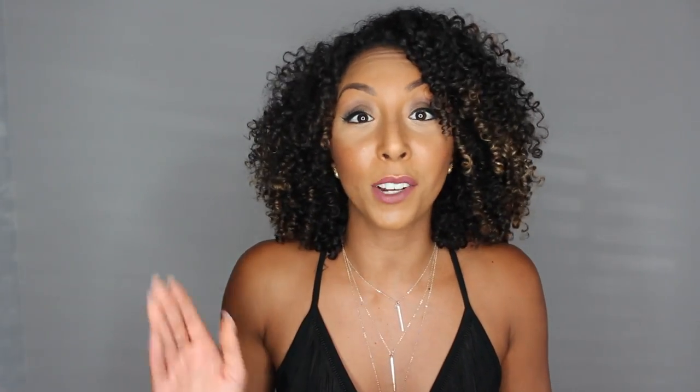Now there are a total of four types of hair: type one, type two, type three, and type four. And then those are broken down into subcategories of A, B, or C.